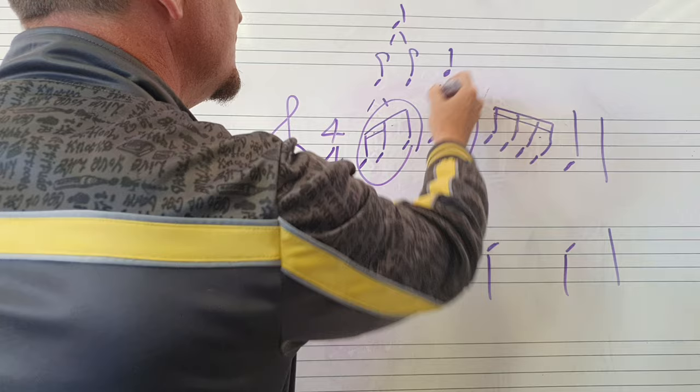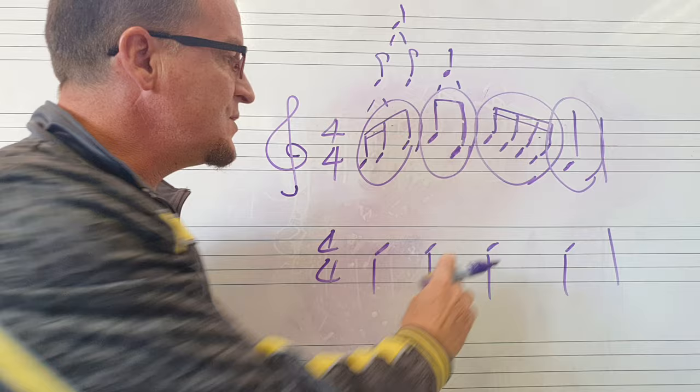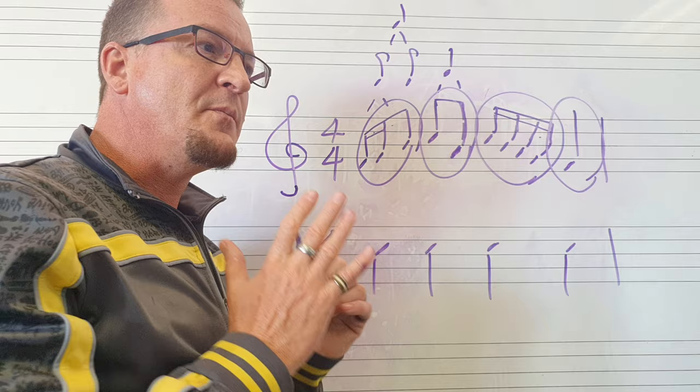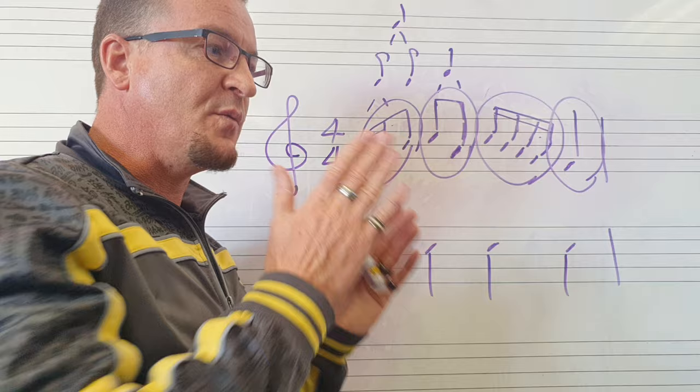I hope that helps you understand at least the concept of beaming. There is a rule that has to do with which way the stems of the notes must go up or down, and I will show you that in another video. But this is the concept of beaming — basically you're beaming according to the time signature given in Grade 1: 2/4, 3/4, 4/4. We consider each crotchet as a beat and we're beaming according to each of those beats.